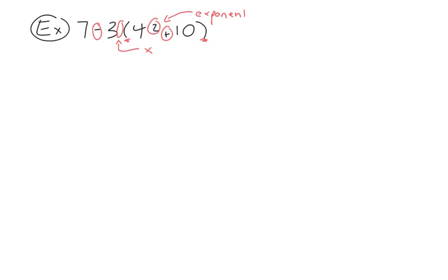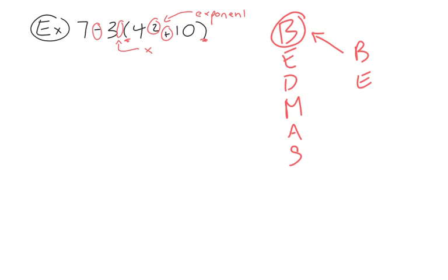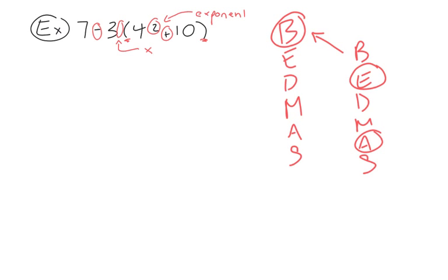The order of operations is best recalled with BEDMAS. We want to do whatever is in the brackets first. Once you look inside the brackets, you almost have to do BEDMAS again — it's like BEDMAS within BEDMAS. Within the brackets we have addition and an exponent, so according to BEDMAS we do the exponent first, then addition.